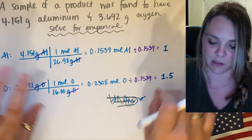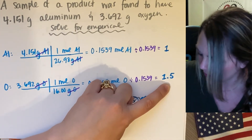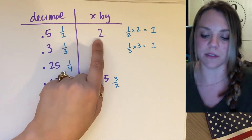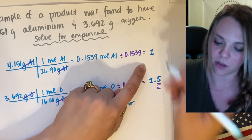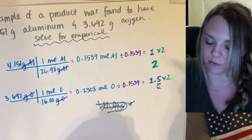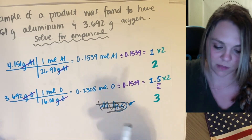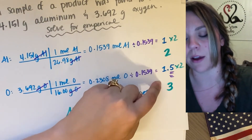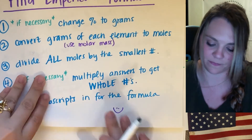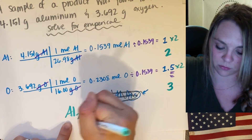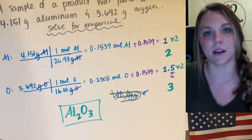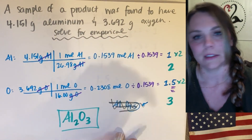I've got those rules, and I have 1 and 1.5 — a decimal ending in 0.5 — so I'm going to multiply both by 2. 1 times 2 is 2, and 1.5 times 2 is 3. Now I have whole numbers, so I write the subscripts in for the formula. The empirical formula is Al₂O₃ — aluminum oxide!